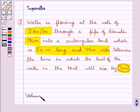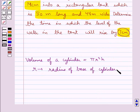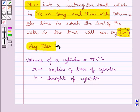First of all, let's recall the formula for the volume of a cylinder. This is equal to π r² h, where R is the radius of the base of the cylinder and H is the height of the cylinder. This is the key idea to be used in this question.